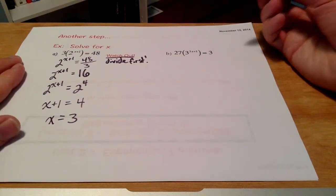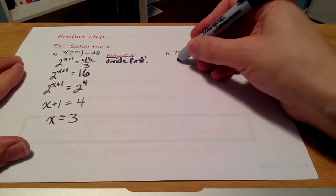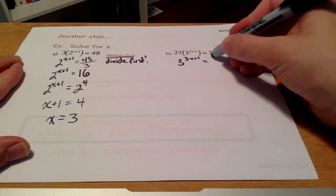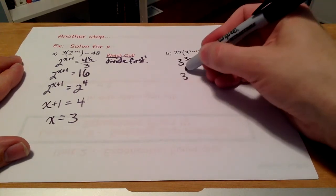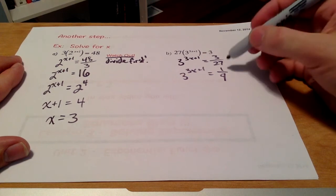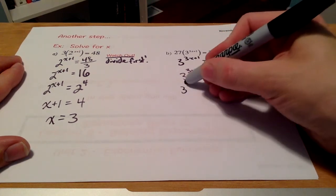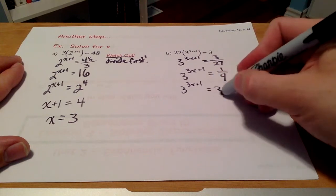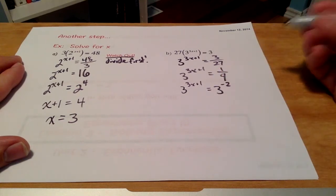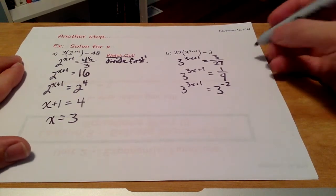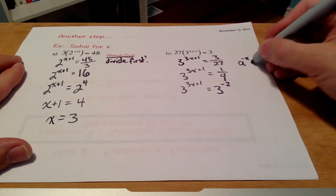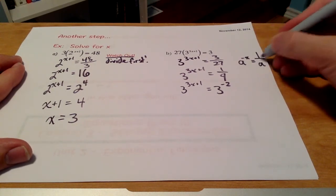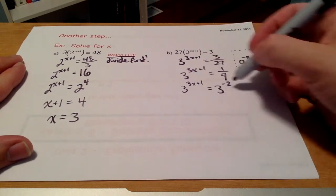This one here, exactly the same concept. I'm going to divide both sides by 27. So I get 3 over 27. That's just 1 over 9. And this is a very similar example to what we saw in the other video lesson where I can rewrite 1 over 9 as 3 to the power of negative 2. There is an exponent law which allows me to do that. If I have a to the power of some negative x, I know that to be 1 over a to the x.